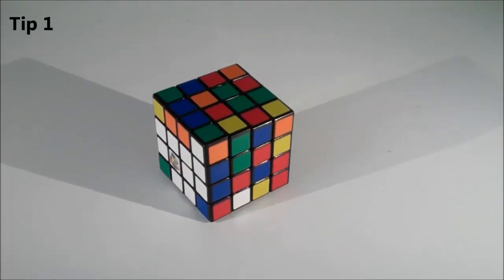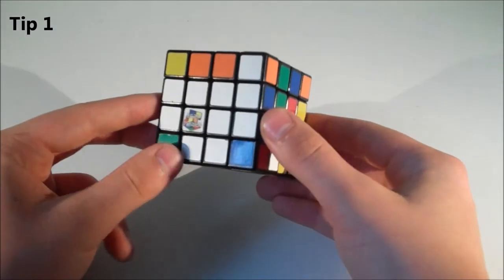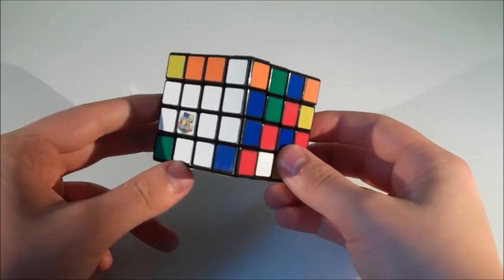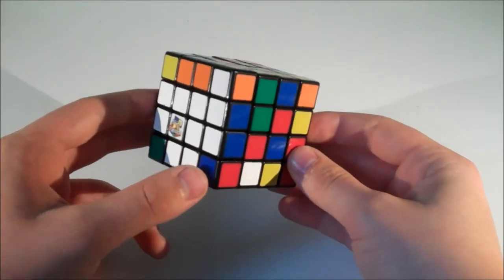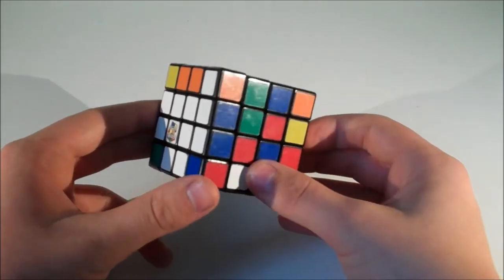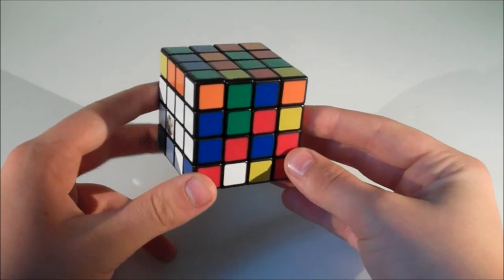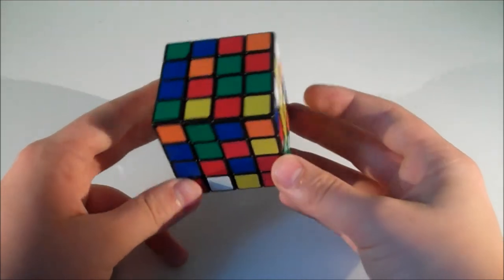Okay, so the first useful tip or trick is when we have already built the first two centers and three white edges and we are starting to solve the last four centers. Now this is the most difficult part of the Yau method and for most people it takes the most amount of time.